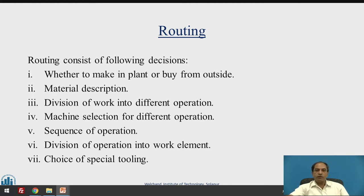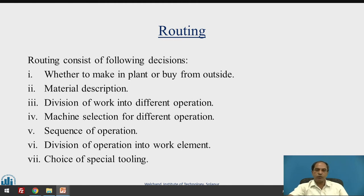When we talk about routing, it consists of some major decisions. The first is make or buy — whether to manufacture inside the organization or procure from an outside agency through outsourcing. The second is material description — what materials are involved in the specifications. Then we divide the work into different operations, followed by machine selection for those different operations — deciding which machines are required for each particular operation.